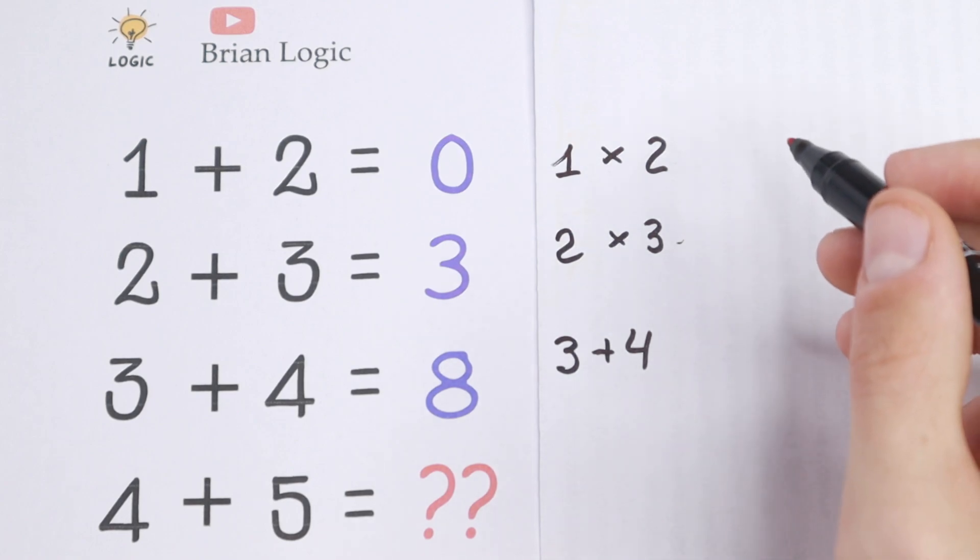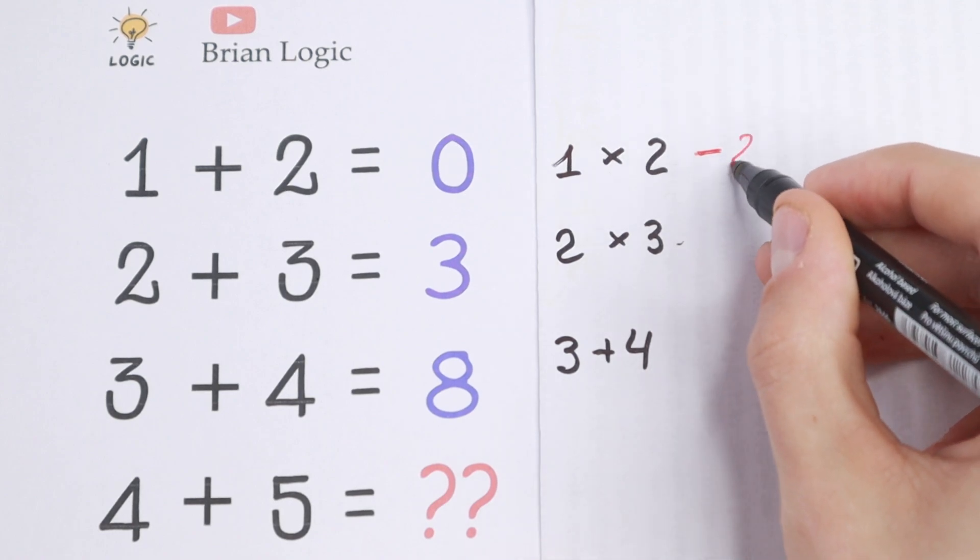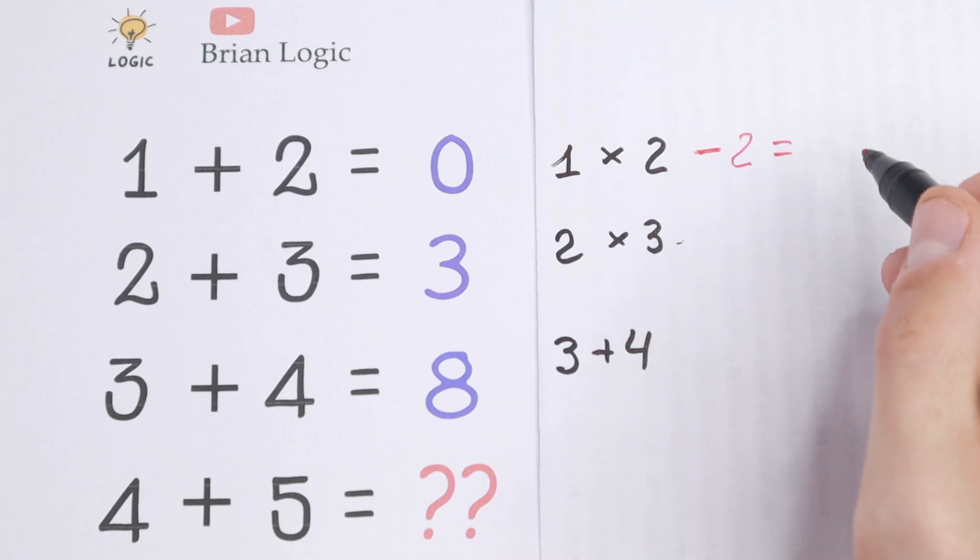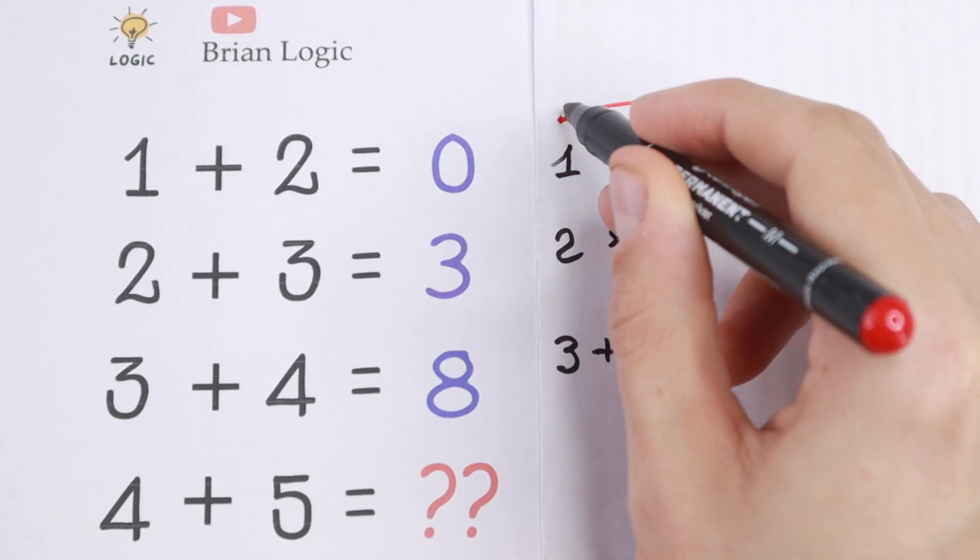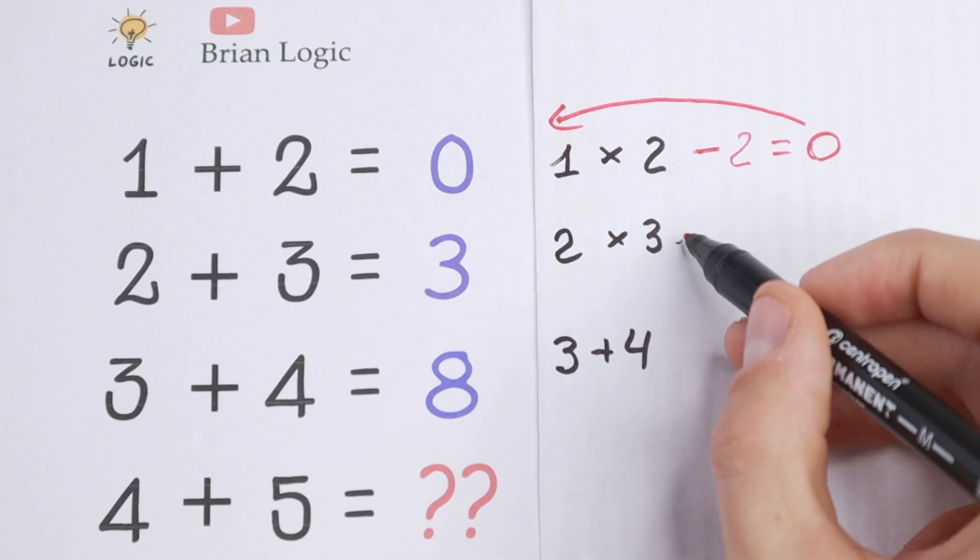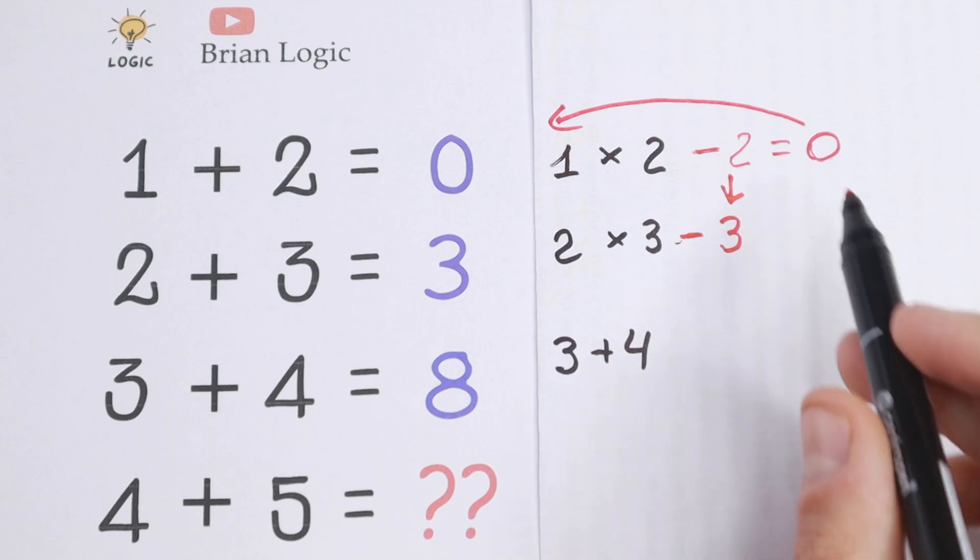So I suggest to subtract 2 from here. If we subtract 2 we will have 1 times 2 minus 2, it will be 2 minus 2 equal to 0, which is the same as this number. So it's really good. And I go further, I try to subtract the next natural number. So from here, if we subtract 3, so the next natural number, so 2, 3.